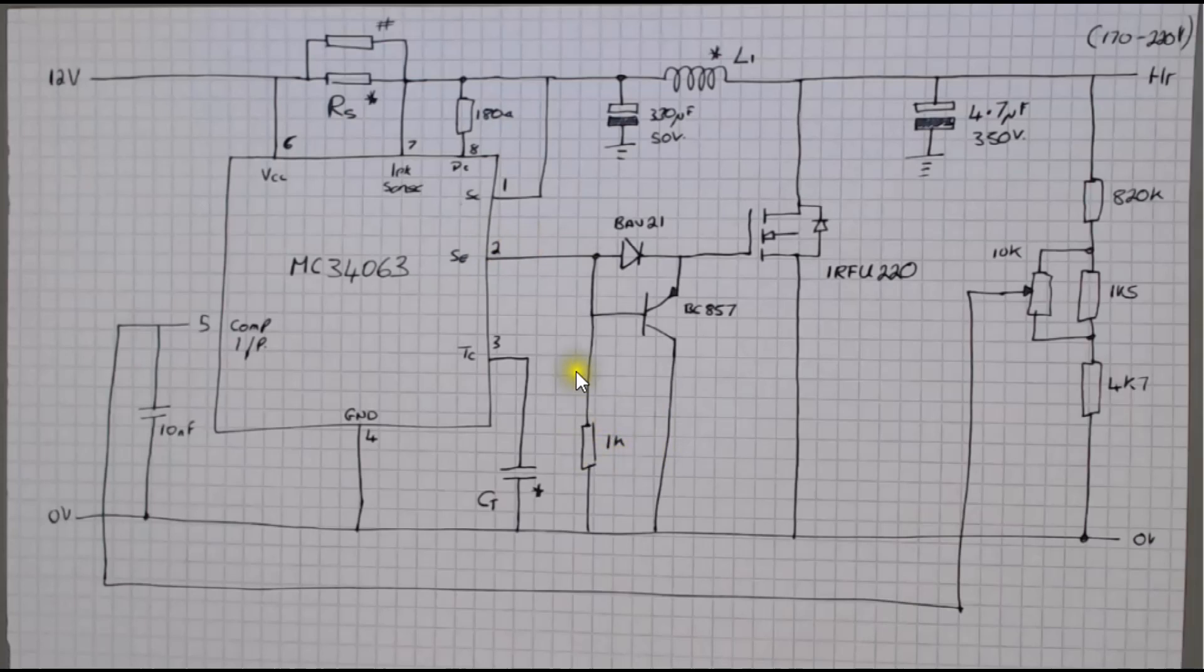the 1k resistor here pulls the base down and as soon as the base gets 0.6 or 7 volts lower than the emitter the transistor turns on and quickly discharges the gate capacitance to ground.